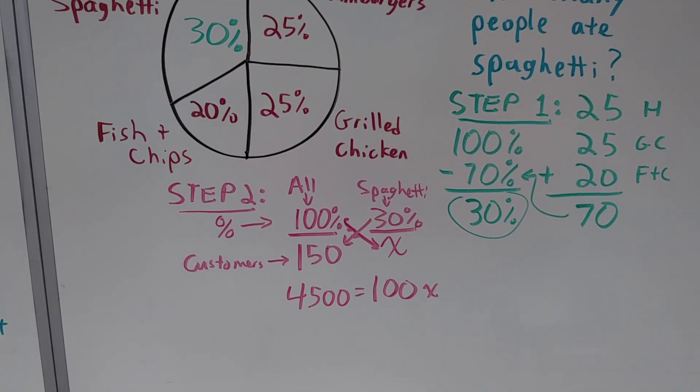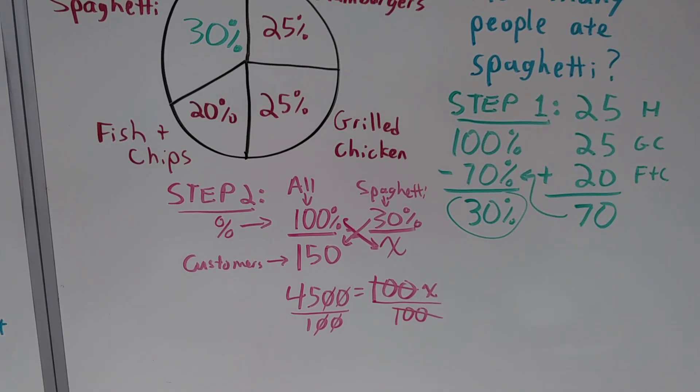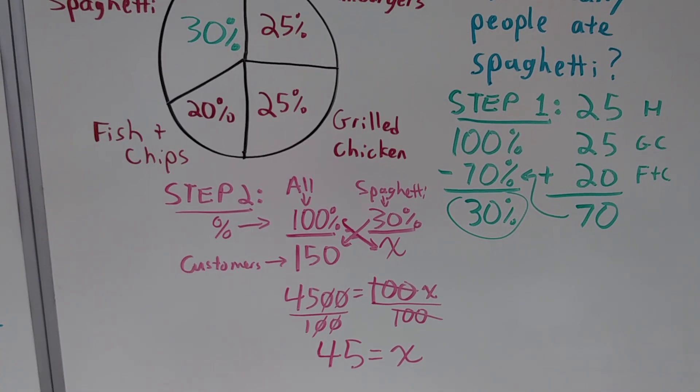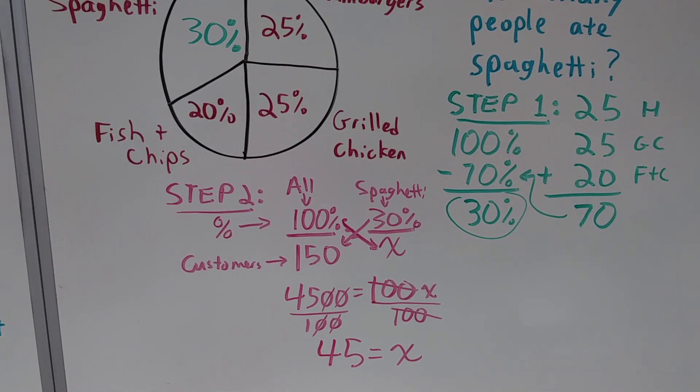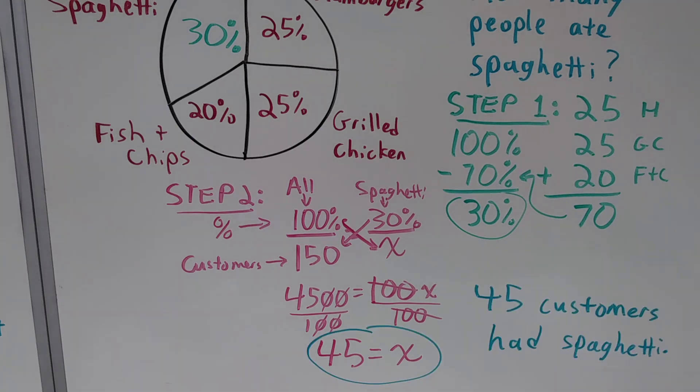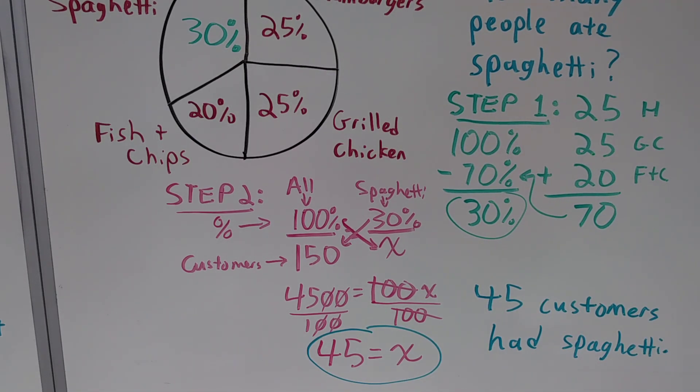Using good old-fashioned cross-multiplication, we can see that 100 times x equals 100x, and 30 times 150 equals 4,500. We divide by 100 on both sides to get x by itself. And so we find that 45 equals x. This means that 45 customers had spaghetti.